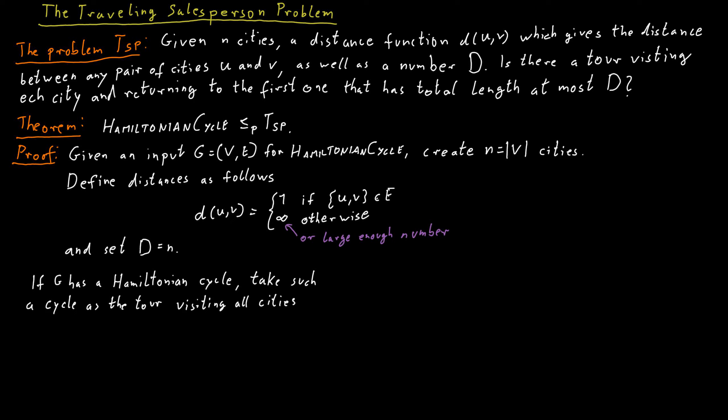And clearly, because in the cycle in G, we only traverse edges that actually exist, for each such edge, we would go from one city to the next, and that would cost us 1, because the distance between these cities would be 1. So we would never actually go from one city to the next that has this infinite distance.